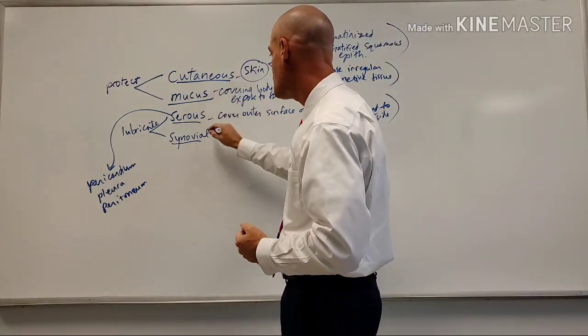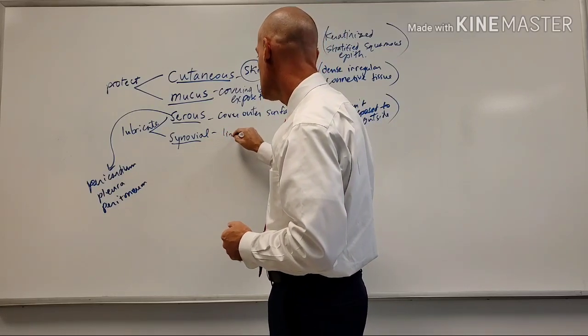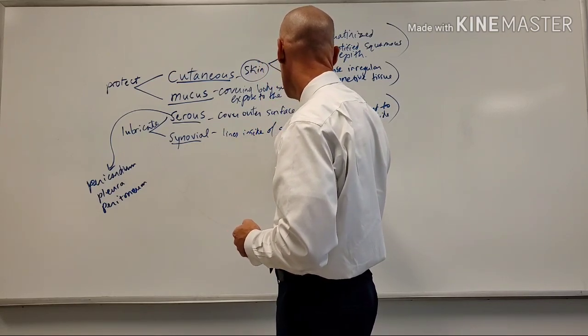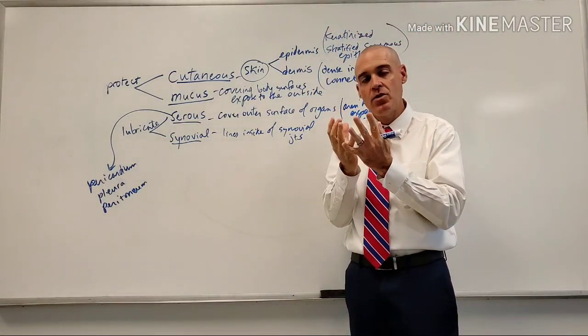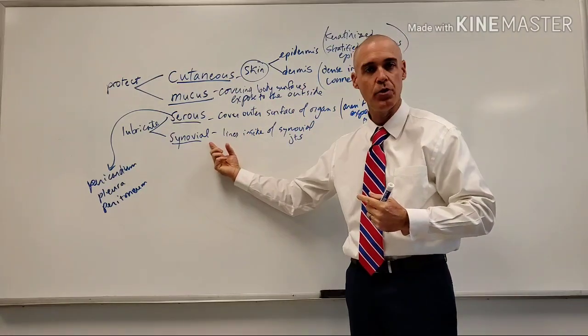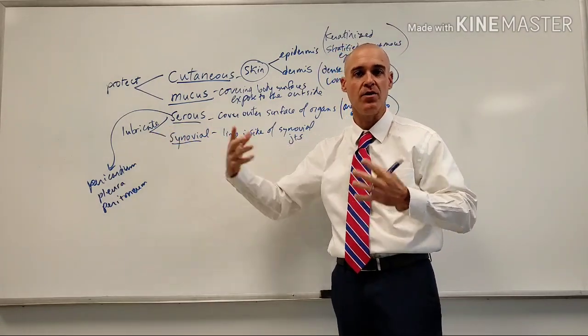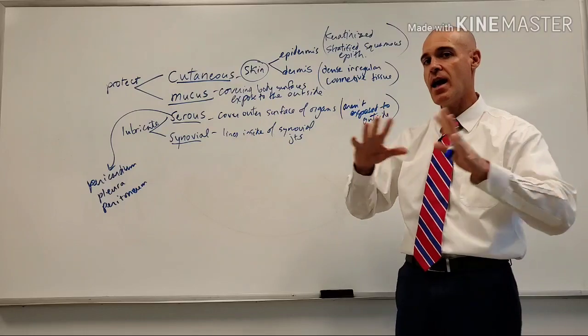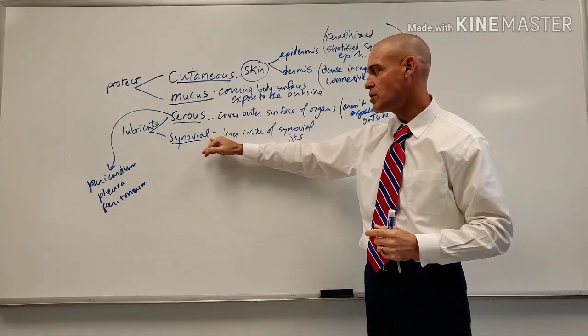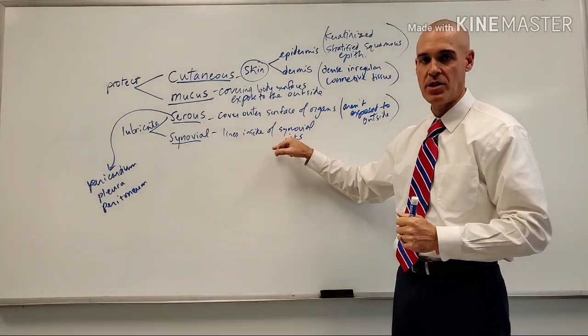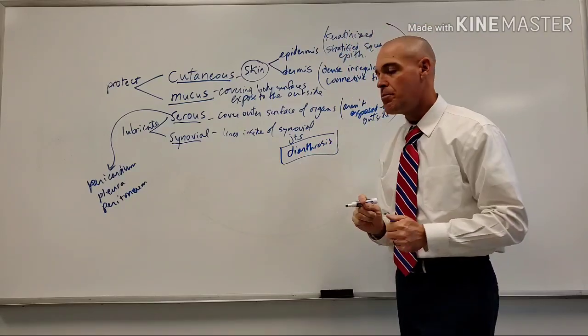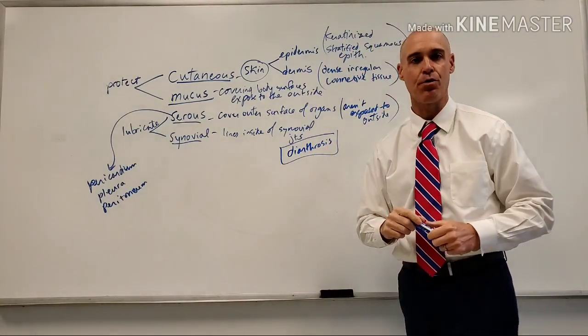The final one is going to be our synovial membrane, which of course lines the inside of synovial joints. And again, it's going to line the inside of the synovial joint. It's going to secrete a secretion called synovial fluid. And of course, like we just said, it's going to lubricate. It's going to lubricate in this case the synovial joints. Keep in mind, it's not every joint in the body because we have other joints that are non-synovial. But this is strictly going to lubricate all synovial-based joints, which are also referred to as a diarthrosis joint. So it's only going to be seen inside a diarthrosis joint.